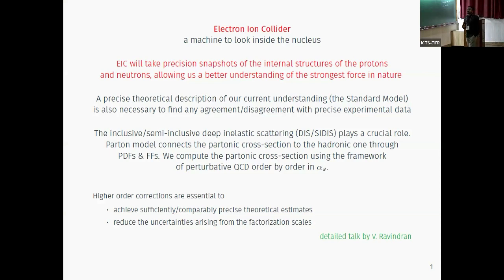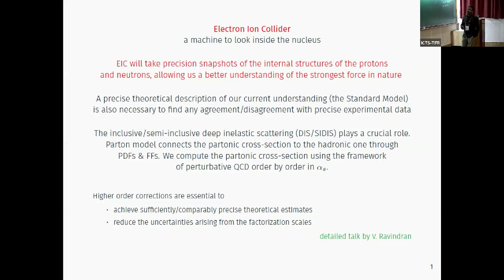The main point is that the EIC will take really good precision measurements and collect very precise data. We of course have to compare it with theory, and to compare, both should be on the same level — so both should be similarly precise. That means a precise theoretical description is very much needed. One of the main processes is SIDIS or CDS, where the parton model connects the partonic cross-section to the hadronic one, and we compute the partonic cross-section using the framework of perturbative QCD expanded in alpha_s. That is the topic of this talk.